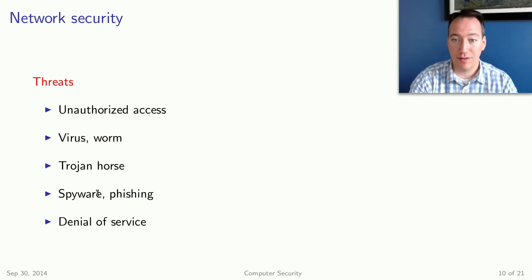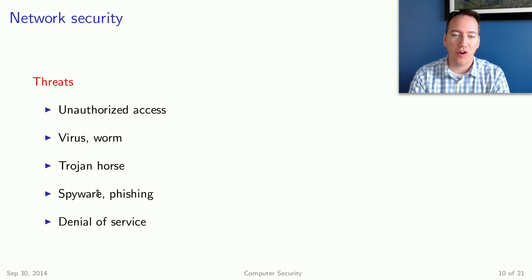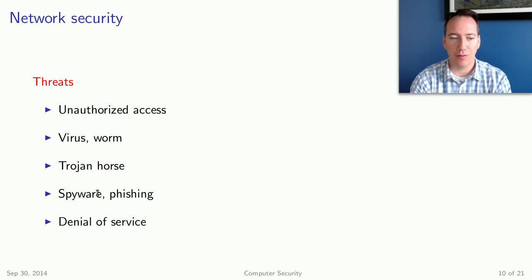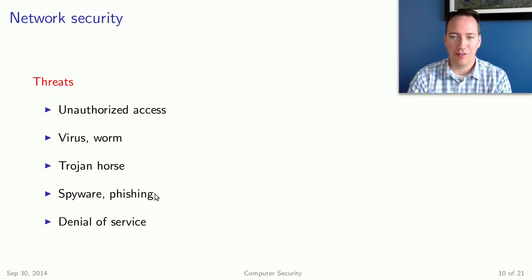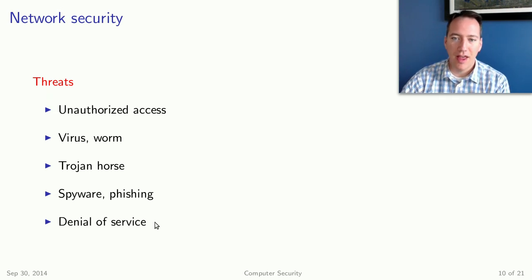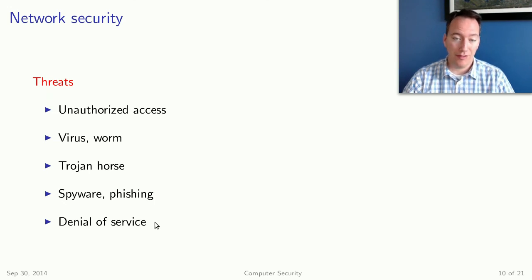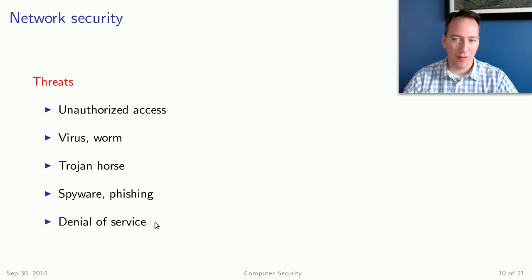Spyware, like sniffers and keyloggers, is trying to track what you're doing and use that either for commercial or illegal purposes. Phishing gives you a website that looks like your bank and wants you to log in and confirm your password — but really all they're doing is collecting your login information. Denial of service is an attack where you overwhelm a server so it can no longer serve legitimate users, because millions of computers taken over by hackers are hammering the website.